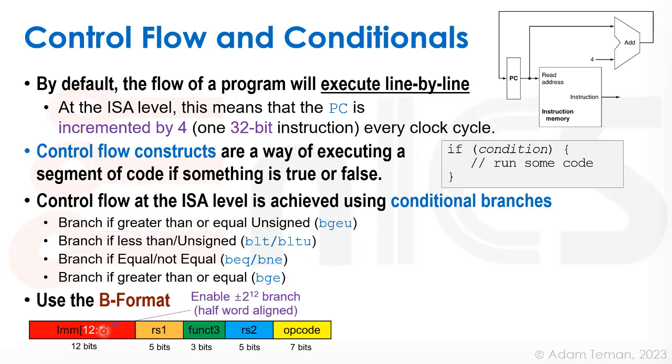So the B format has the same as the I format, as we can see. The only difference is that the immediate over here is shifted to the left by one. The reason that we shift it to the left by one is that all instructions are going to be aligned either at a 32 or a 16-bit alignment.